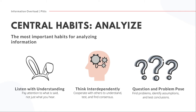Thinking interdependently means realizing that we don't come to our conclusions on our own — we are always incorporating the voices of others. When engaging with new information, this can mean testing that information against other research on the topic, testing a conclusion within a specific community, or looking for a consensus and corroborating voices. It's a step beyond simply seeking peer review — it means taking a broad look at data and connecting it to other things communities might know in order to understand it better.